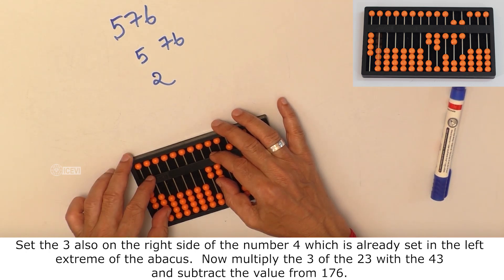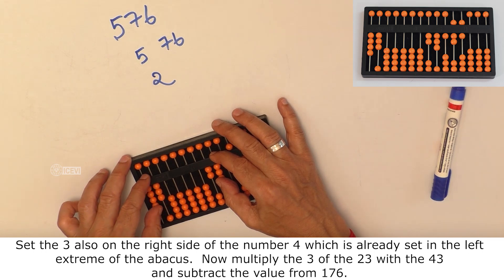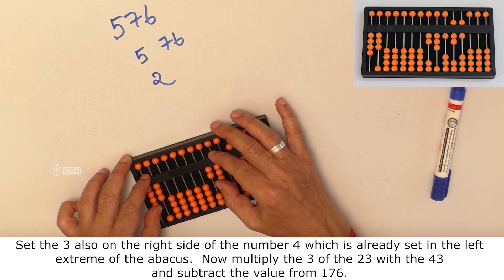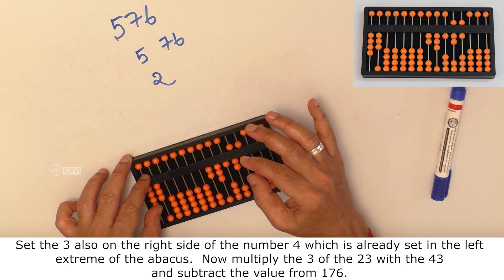Set the 3 also on the right side of the number 4 which is already set in the left extreme of the Abacus. Now multiply 3 of 23 with 43 and subtract the value from 176.